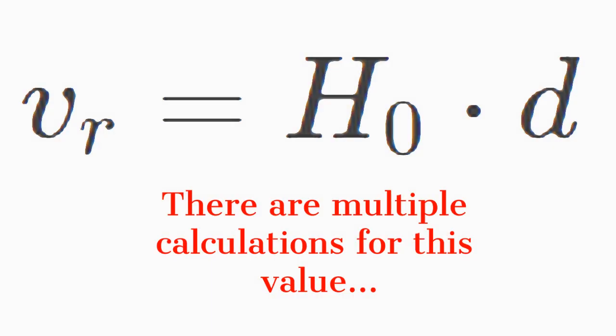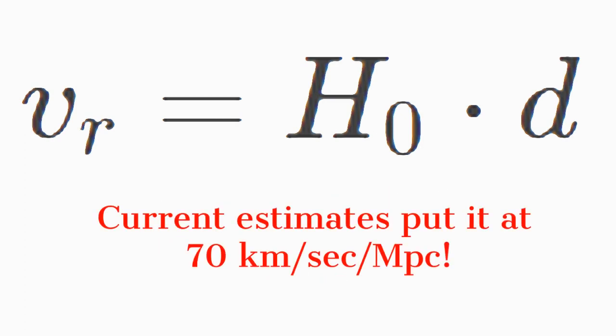Current calculations put the value of Hubble's constant at roughly 70 kilometers per second per megaparsec with a 3% margin of error.